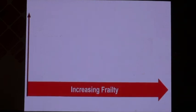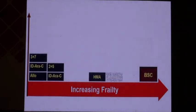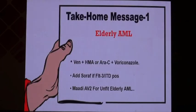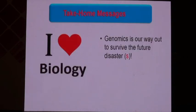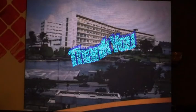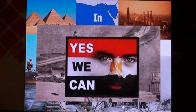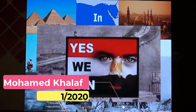Looking at the overall affordability curve, venetoclax combinations are now confirmed as affordable options in Egypt. The take-home message is that we can use interventional pharmacoeconomics in this example — you can also add patients with FLT3 mutations using sorafenib. We have a protocol for unfit patients as well. Thank you very much.